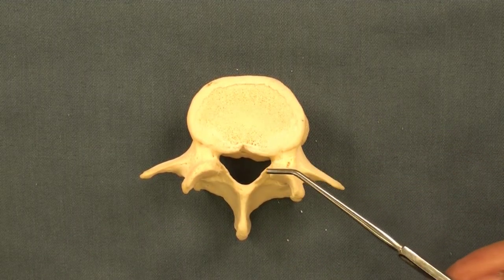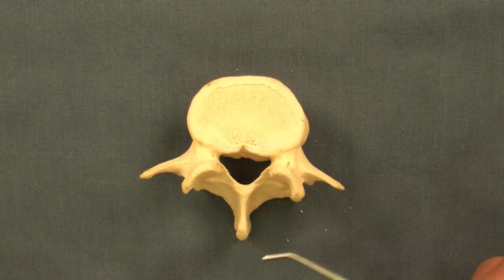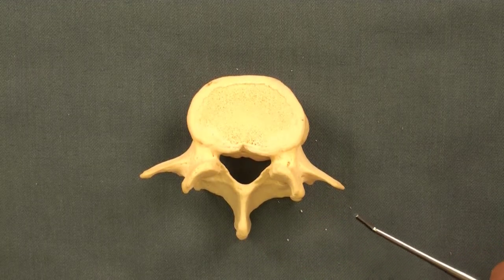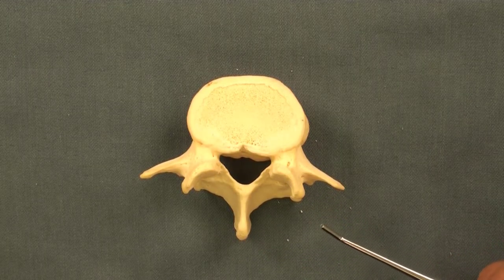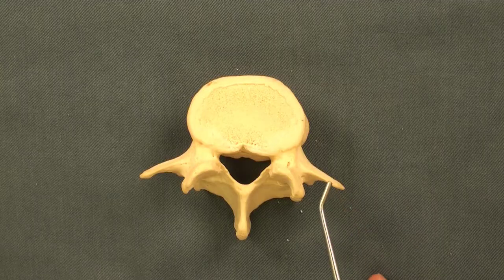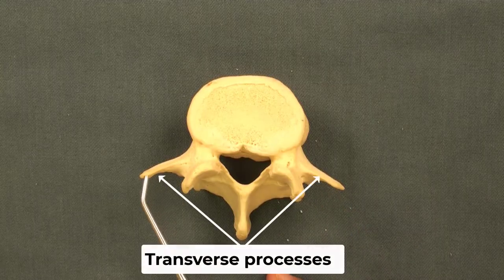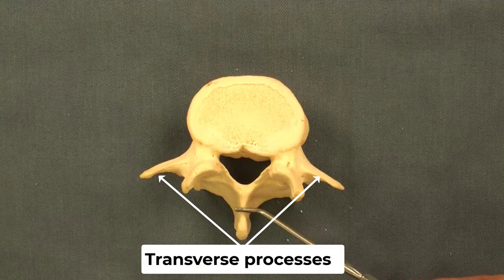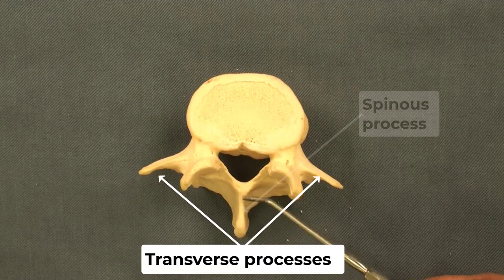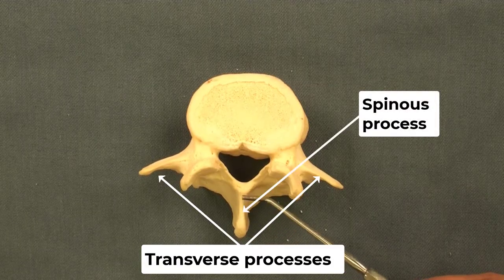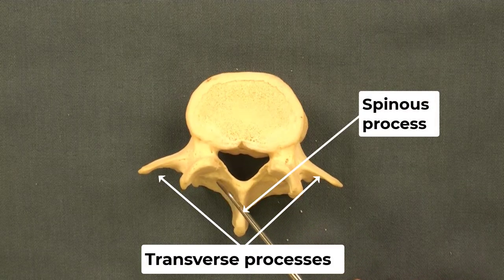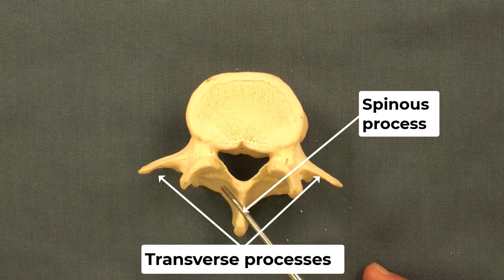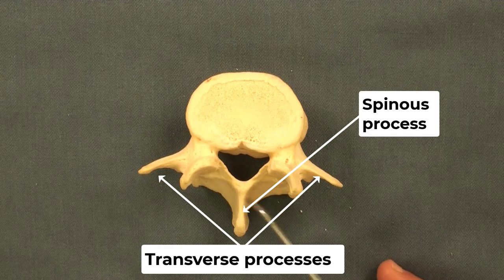We have a couple of processes associated with each vertebra: the transverse processes on each side, one on each side, and the spinous process in the midline, which is practically formed by the union or fused laminae.